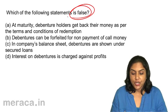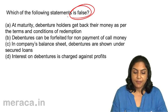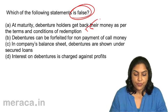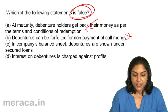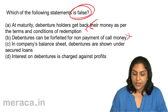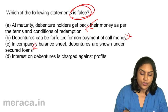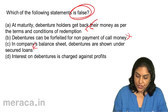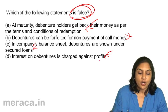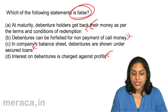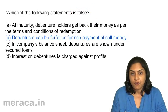At maturity, debenture holders get back their money as per the terms and conditions of redemption — that is true. Can debentures be forfeited? No, they cannot be forfeited. In the company's balance sheet, debentures are shown under secured loans — that is true. Interest on debentures is charged against profits — that is true. So the correct option is B. Debentures can be forfeited — that is false. Debentures cannot be forfeited. Option B.